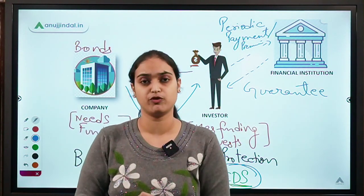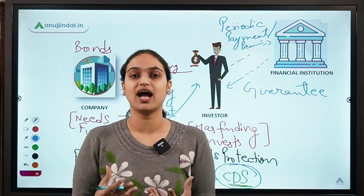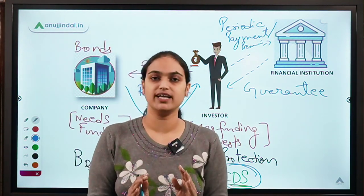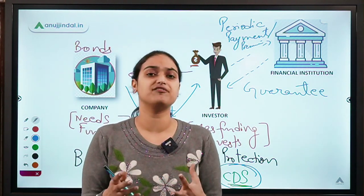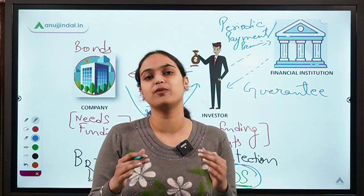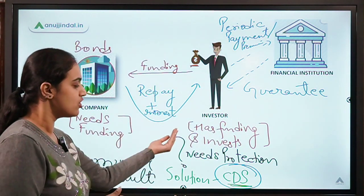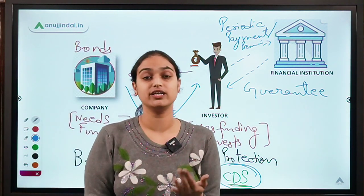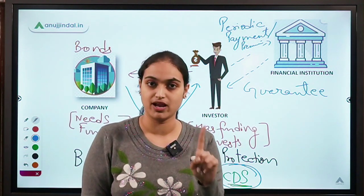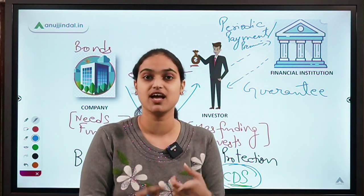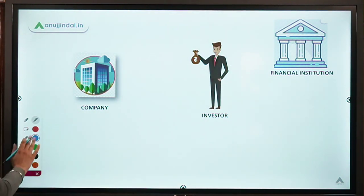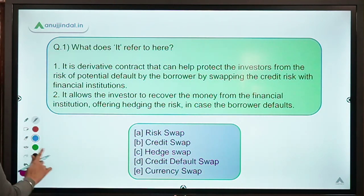Who are retail investors? They are non-professional investors who don't have as much money or knowledge as institutional investors like mutual funds, pension funds, or insurance companies. They invest small amounts in a non-professional manner and also need protection from the default risk. RBI has allowed them to use Credit Default Swaps, but only for one purpose — to hedge their credit risk, that is, getting protection against the borrower's default. This is the whole concept of Credit Default Swaps. The answer to the question is option D.